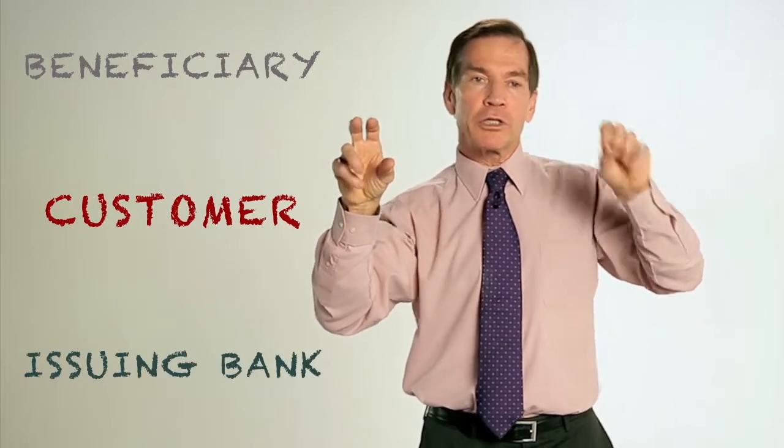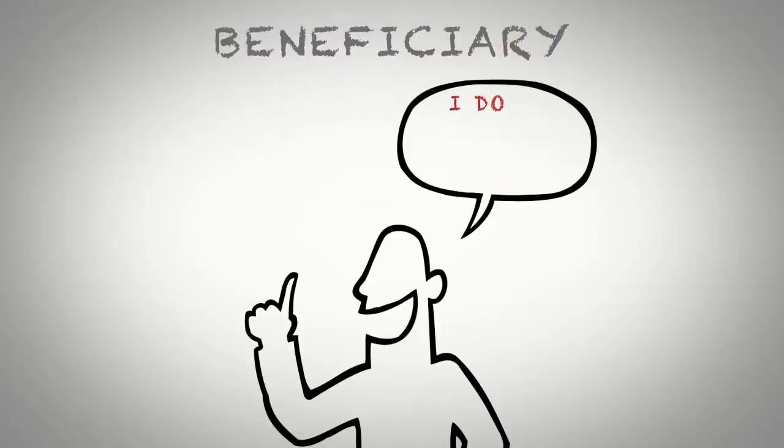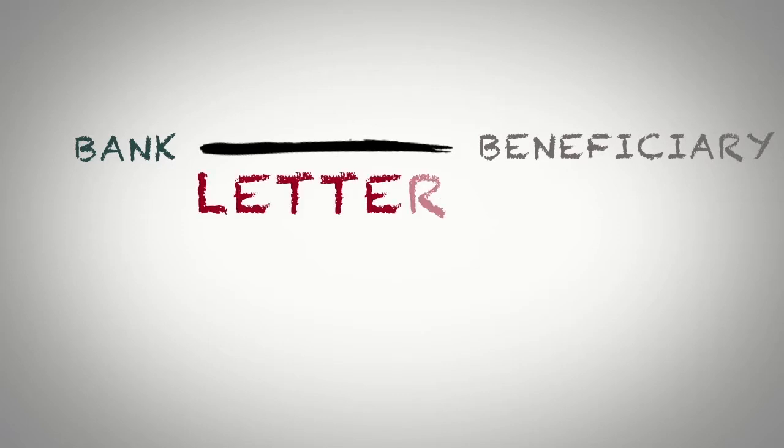And how a letter of credit works is the beneficiary says, I don't really trust you customer to pay me, so I would like a contract between me and your issuing bank agreeing to pay me directly. And that contractual obligation from the bank to the beneficiary is called a letter of credit.